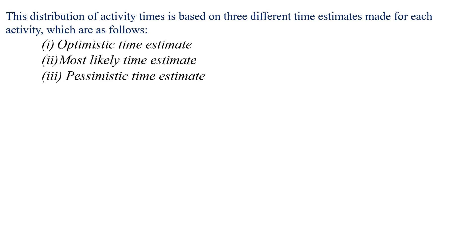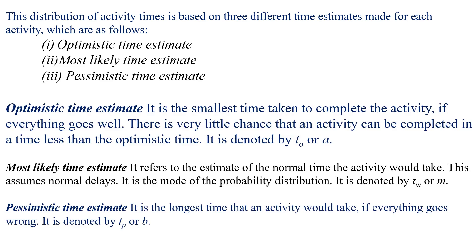First, the optimistic time estimate. It is the smallest time taken to complete the activity if everything goes well. There is very little chance that an activity can be completed in less time than the optimistic time. It is denoted by T0 or small 'a'.